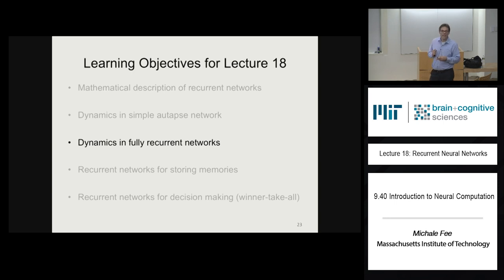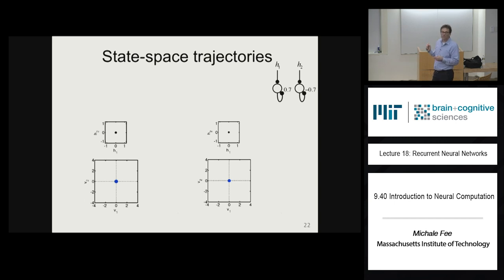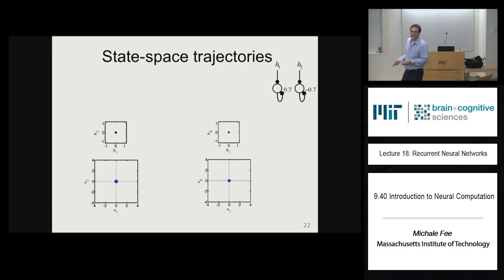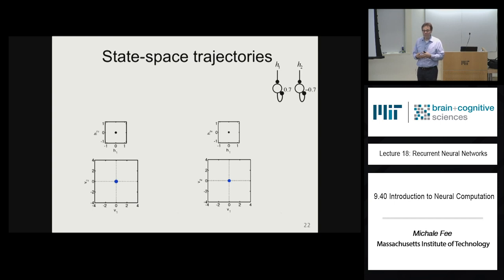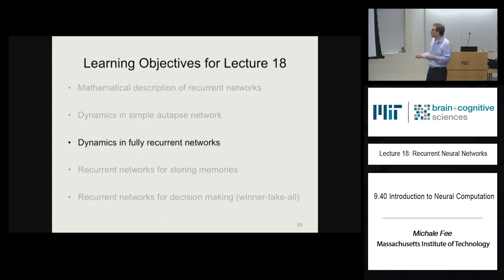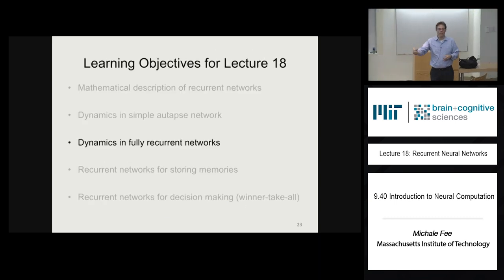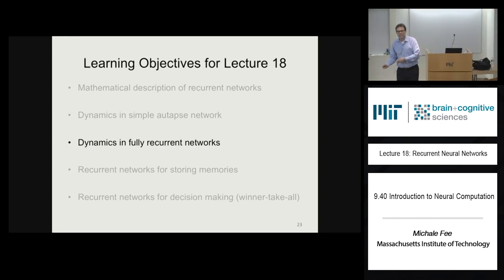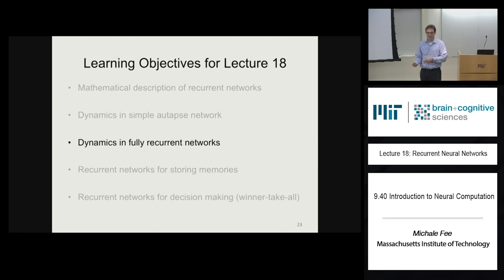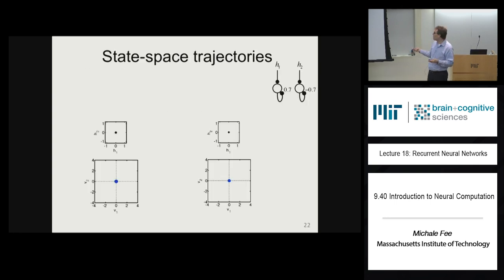What we're going to do is take a fully recurrent network and do a mathematical trick that turns it into an autapse network. The answer for the fully recurrent network will be just as simple as what we saw for autapses. Let's take this fully recurrent network where the weight matrix M now has off-diagonal elements in addition to diagonal ones.